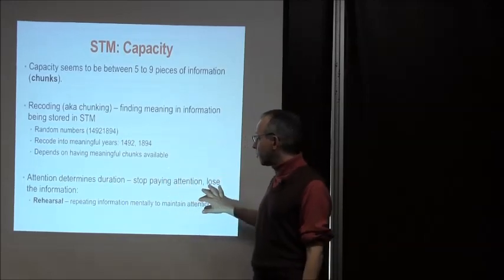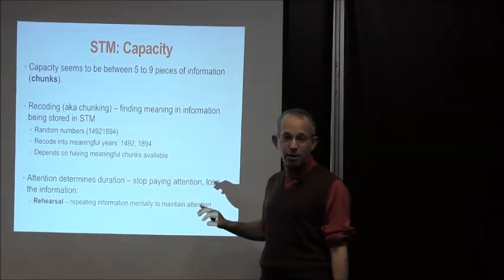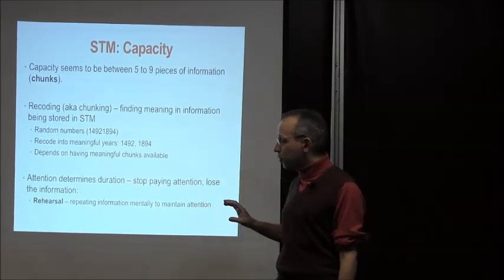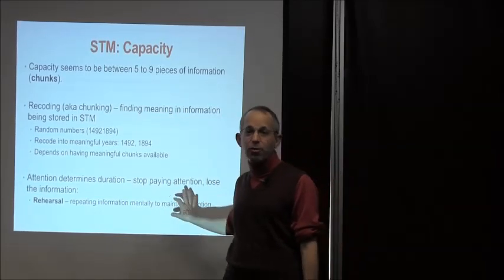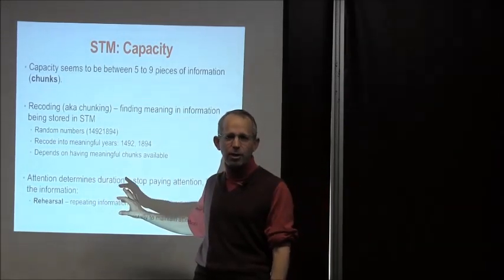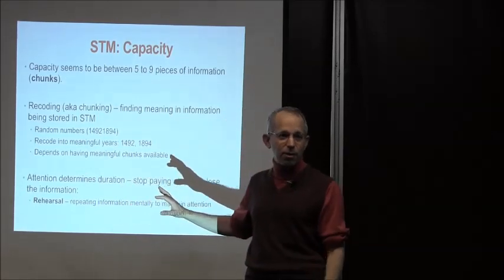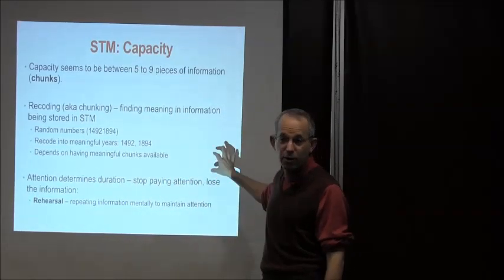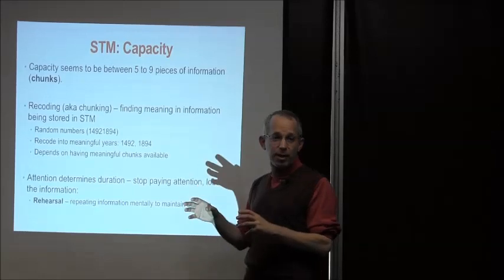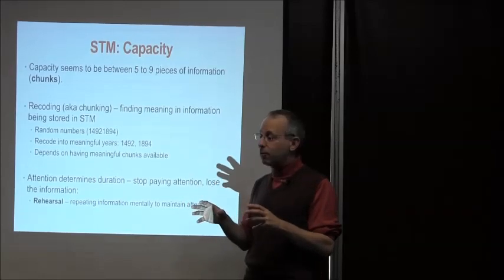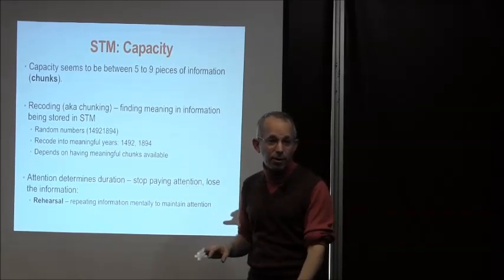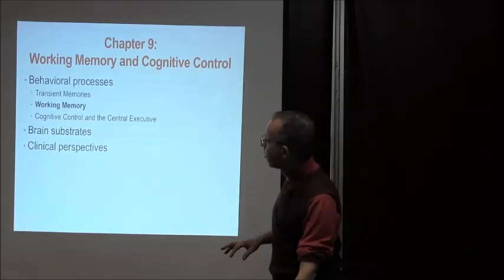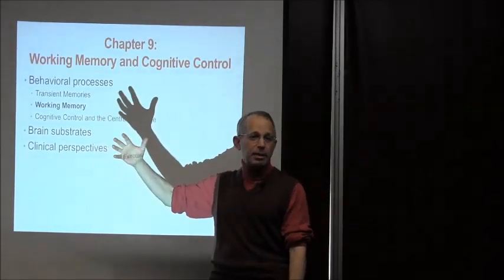Attention determines the duration of short-term memory. If you stop paying attention to this information, you lose it. We saw this in an extreme version with HM — in his case, if he loses attention, information disappears forever. That's the basic picture of transient memories and how information comes into working memory.